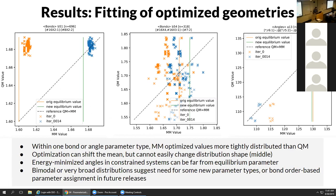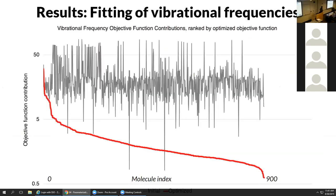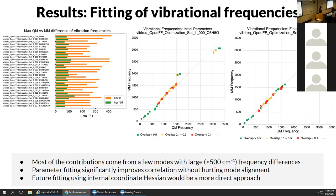For vibrational frequencies, the objective function decreases even more dramatically, and the initial value doesn't vary by too much across different molecules. The MM versus QM vibrational modes plot shows that most of the error comes from a few outliers in the high 1000-2000 wavenumber range and above. After optimizing the valence parameters, things fall much closer to the diagonal line, so we think we're doing well for vibrational frequencies. We still want to move to internal coordinate Hessians - that didn't quite make the cut this year and we're going to do that soon.